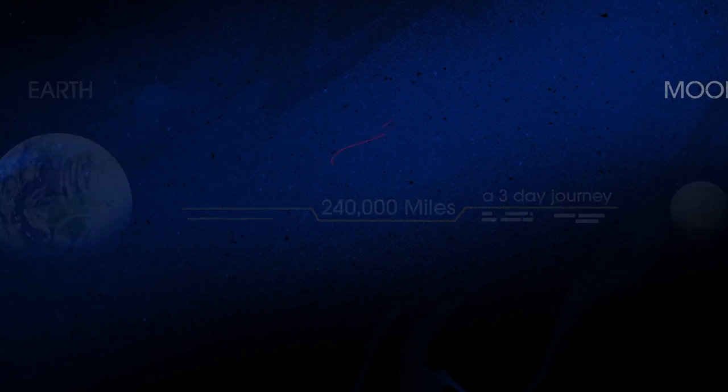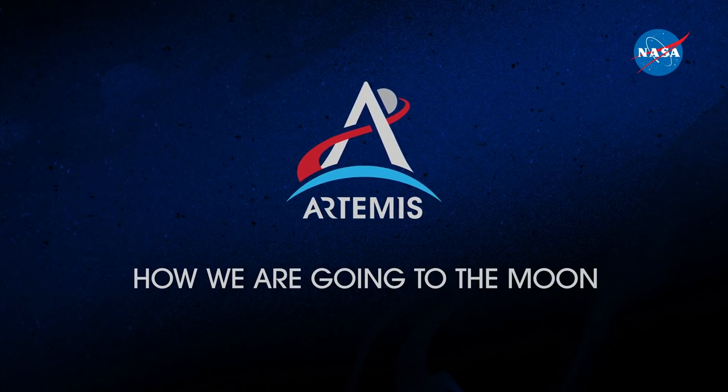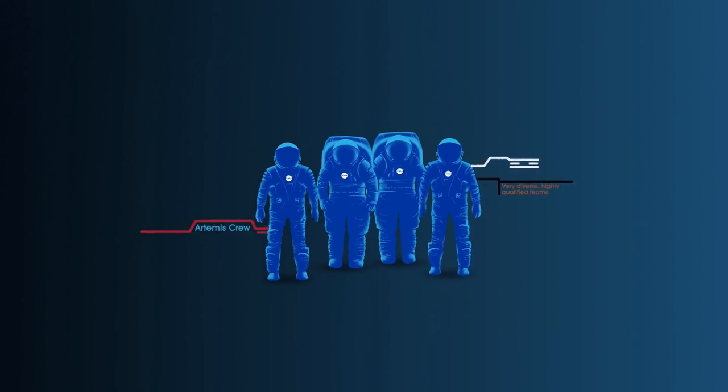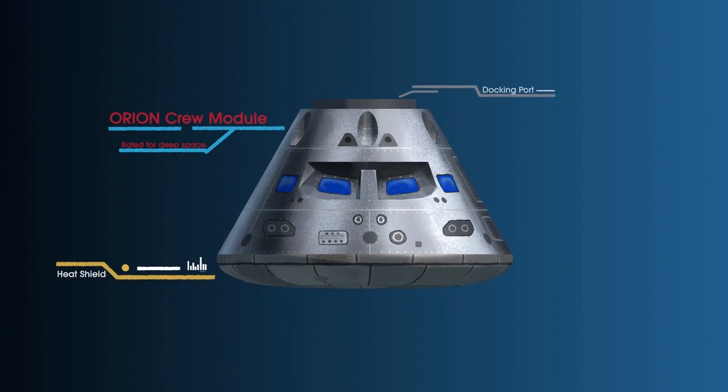So, what will an Artemis mission look like? Everything is designed and tested with our most important element in mind, the astronauts. This is their deep-space, human-rated spacecraft called Orion, built in three parts.